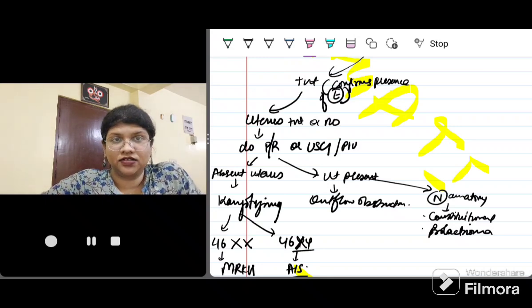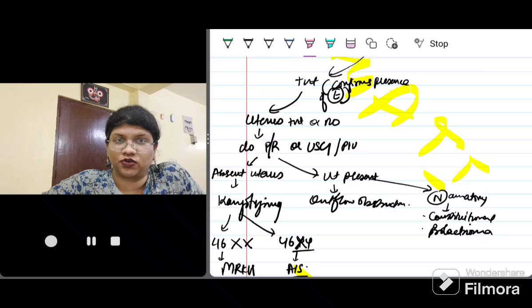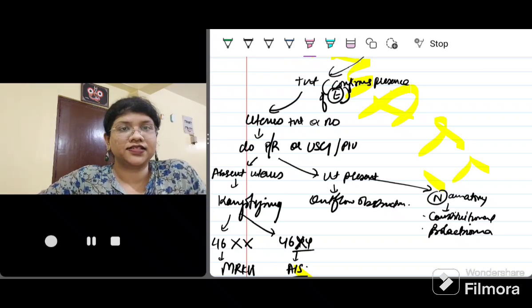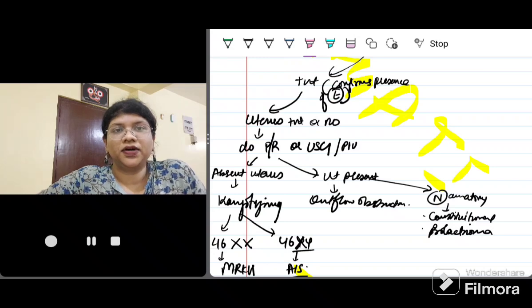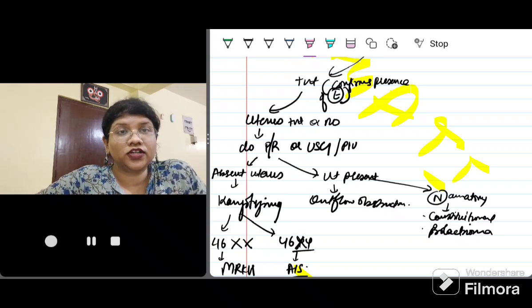If uterus is absent, then I'll do a karyotyping. The karyotype can be 46XX or 46XY. If it is 46XX, it is Mullerian agenesis or Mayer-Rokitansky-Küster-Hauser syndrome, MRKH syndrome. If it is 46XY, then it is androgen insensitivity syndrome. Remember, androgen insensitivity syndrome patient is genotypically male, that is 46XY, but phenotypically female.